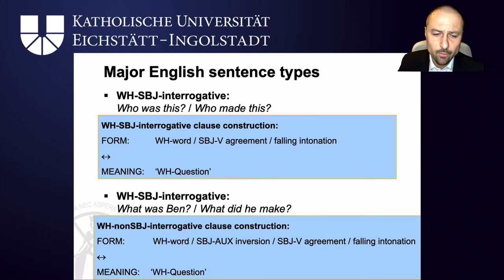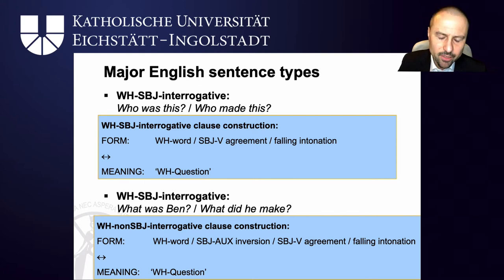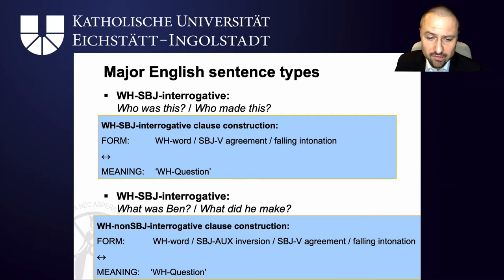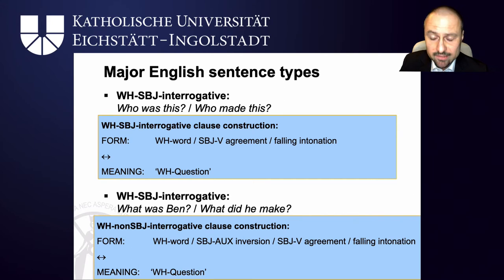In contrast, if you ask for a non-subject element — 'what was Ben', 'what did he make' — the wh word still needs to be in initial position, but then you get subject-auxiliary inversion. You don't say 'what Ben was'; you have to invert them: 'what was Ben'. There is still subject-verb agreement — 'what was Ben', 'what were they' — even though the order has changed. We still have falling intonation. And if there is no auxiliary, the broader rule in English says you need do-support. So you cannot say 'what make he' — 'make' is not an auxiliary verb — so you go for do-support: 'what did he make'. The whole thing still has the meaning of a wh question; it's an information question for one specific piece of information.